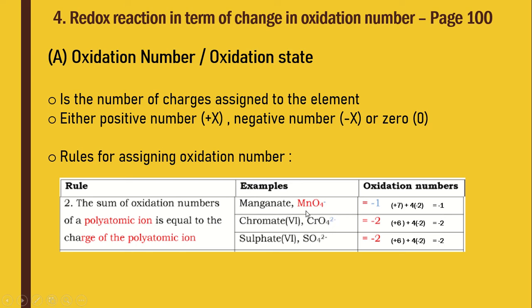For chromate ion CrO₄²⁻: chromium oxidation number X + 4×(−2) = −2. Solving: X = +6 − 8 + 6... wait: X + (−8) = −2, so X = +6. The same goes for sulfate ion SO₄²⁻: sulfur has oxidation number +6, plus 4×(−2) for oxide, giving a total of −2. This applies to all polyatomic ions.